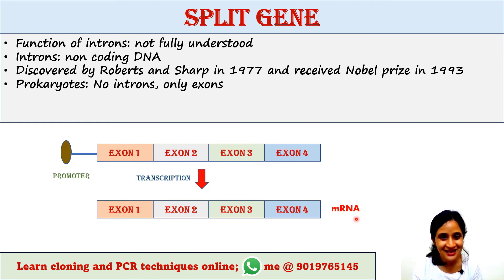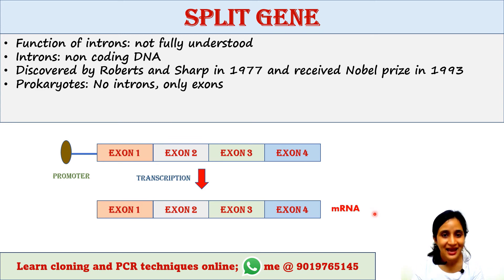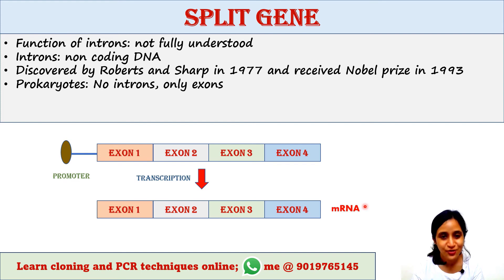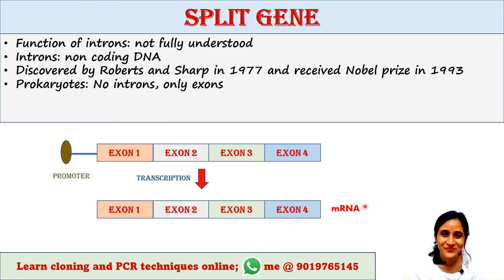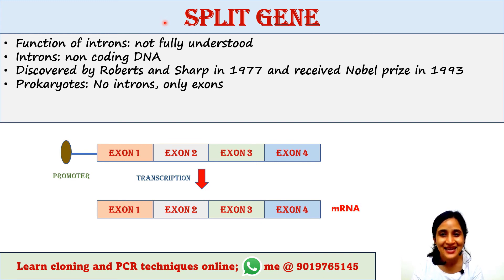Transcription in prokaryotes produces mature mRNA directly, because it doesn't require any splicing step — the mRNA does not contain any introns, so there is no need to remove them. Therefore, prokaryotic DNA contains more regions of DNA that are expressed.